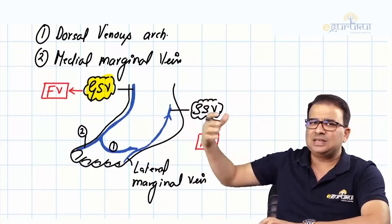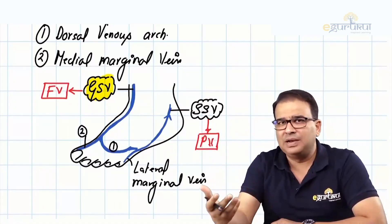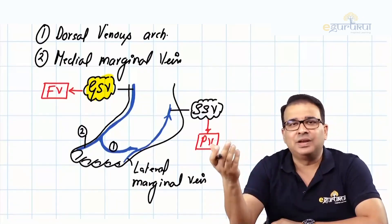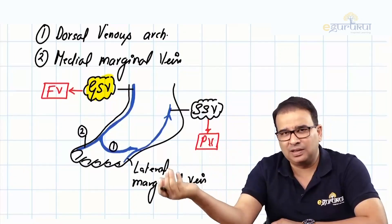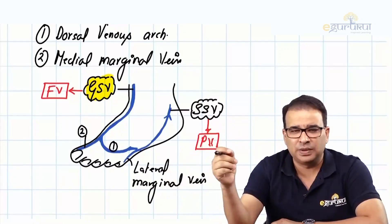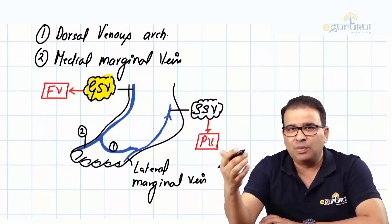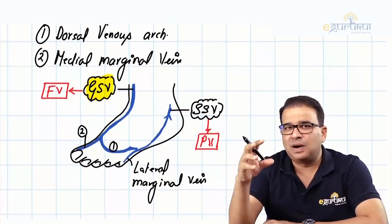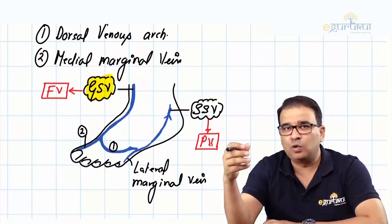The great saphenous vein graft is very commonly taken. For bypass grafts, we can take the internal thoracic artery, the radial artery, or the great saphenous vein. The great saphenous vein is a very commonly used graft, and that's why its surface marking becomes very important.